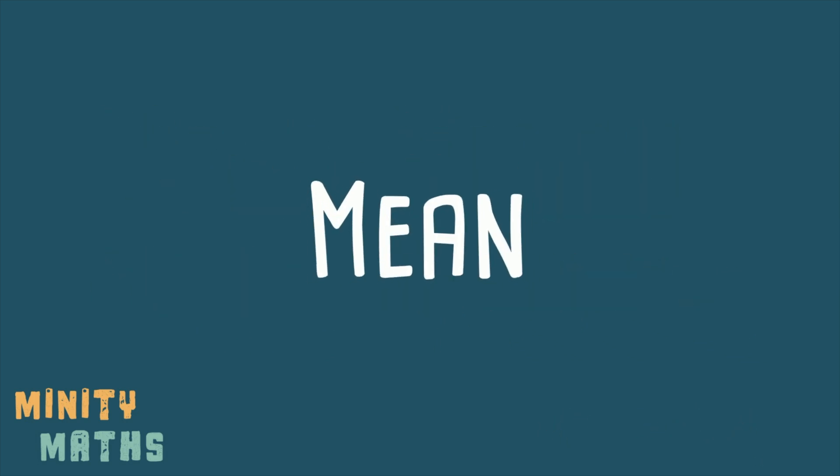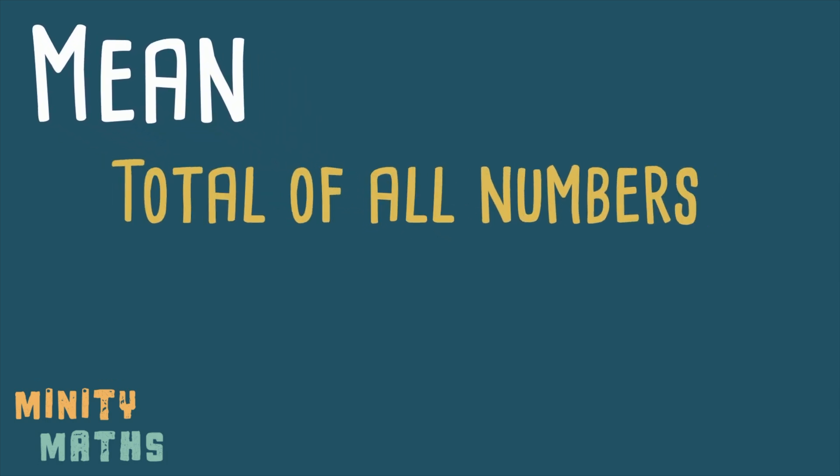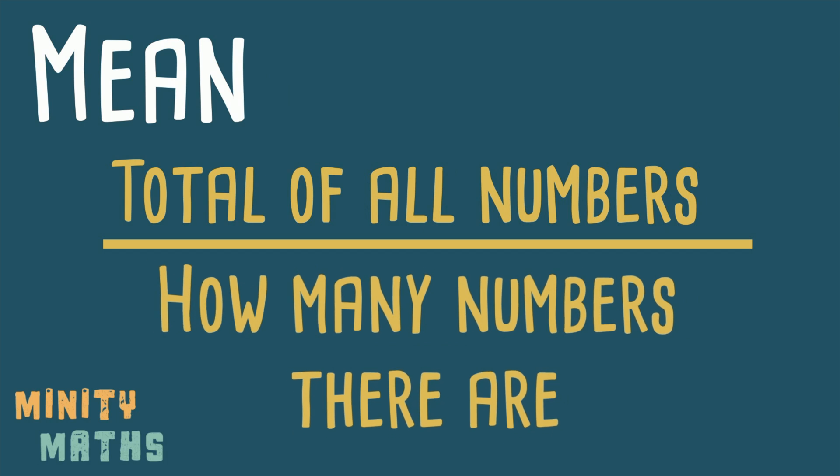Let's start with the mean, or sometimes called the average. The mean is the total of all numbers added up and then divided by the total amount of numbers there.